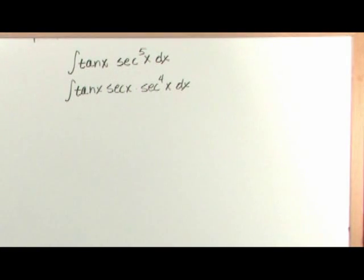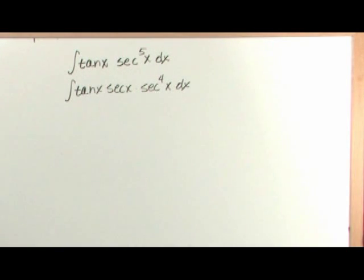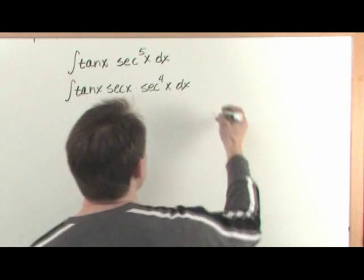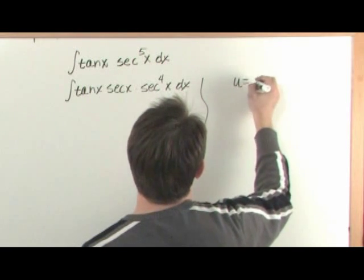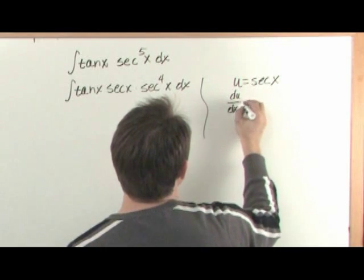Now let me ask you this. If I were to choose a substitution u equals secant of x, the derivative of secant is tangent times secant from your derivative tables, which would cancel with that. So let's do it. If we say u equals secant of x, then du dx equals...